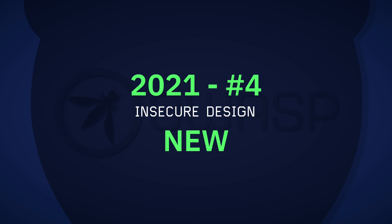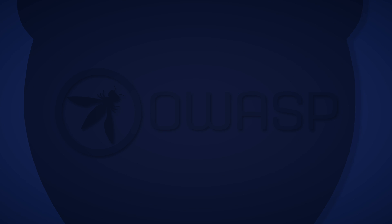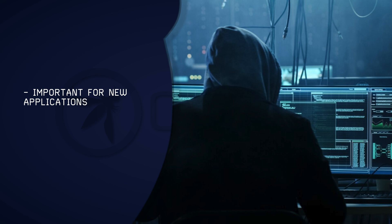Insecure Design, a new category for the 2021 OWASP Top 10, is in at number 4. It was included as a firm call for developers to include more security patterns and principles by design. This is an important consideration when including a new application into your network infrastructure, especially given the supply chain attack on SolarWinds and the effect it had on third-party service providers.